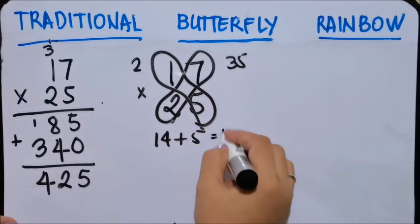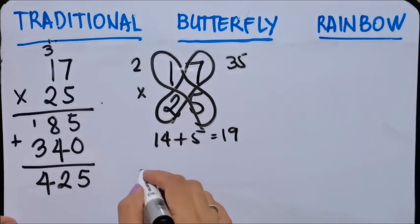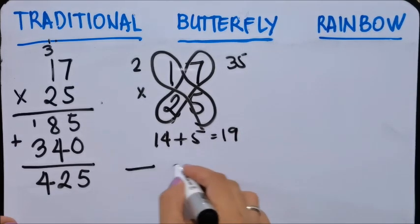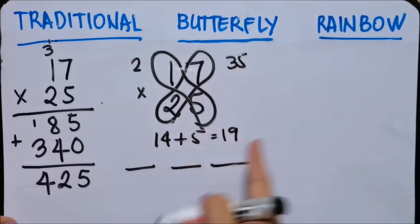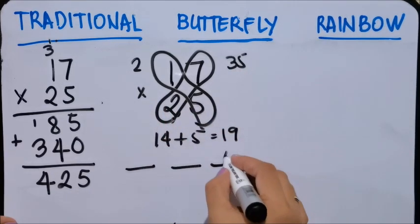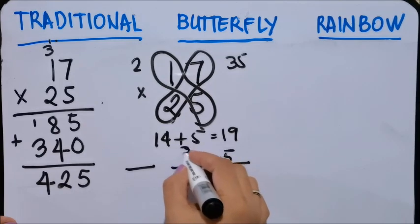So 35. Since it's two digits, you have to carry the first digit. So 5, carry 3.